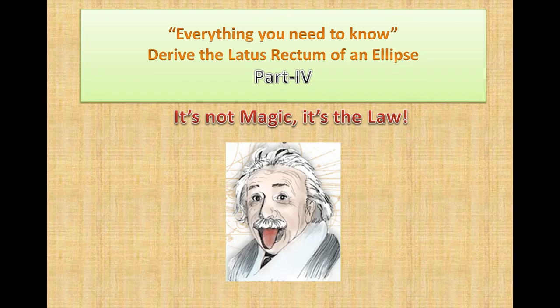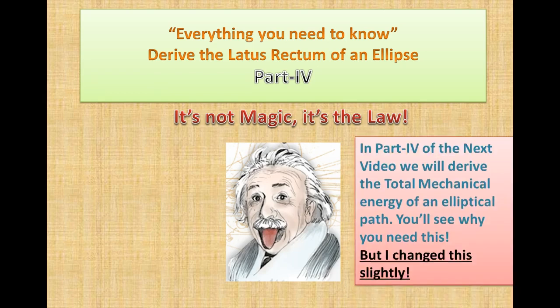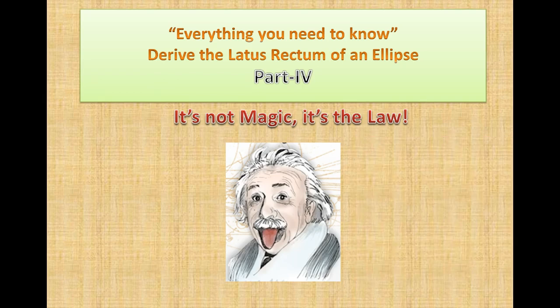Okay, this is part 4 — everything you need to know. Derive the latus rectum of an ellipse, part 4. Now, I remember when we did part 3, I said I was going to derive the total mechanical energy of an elliptical path. And you'll see why you need this, but I've changed this slightly. So let's move on and see how we're going to derive this latus rectum.